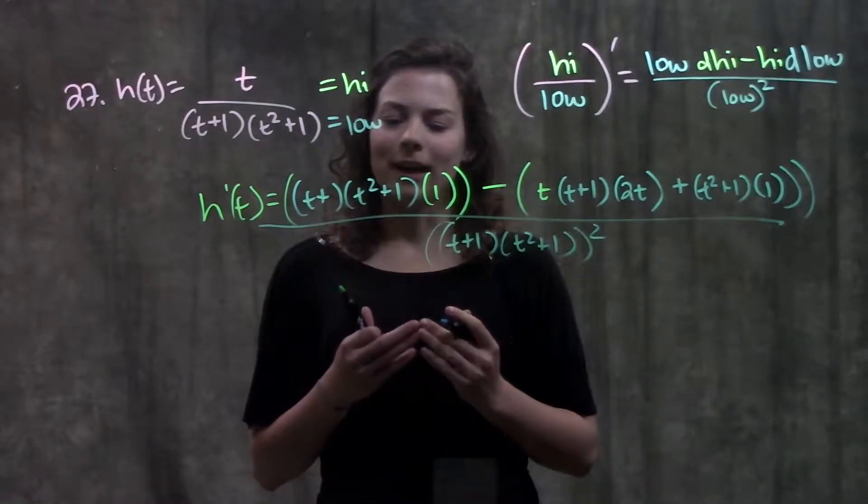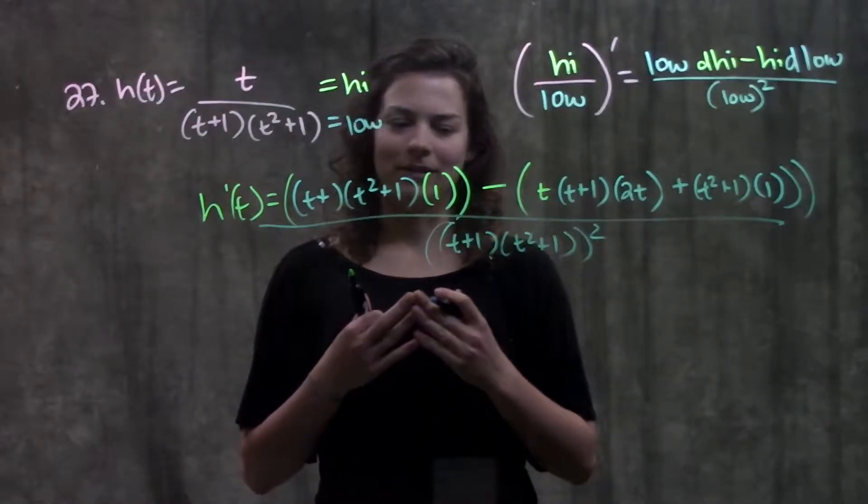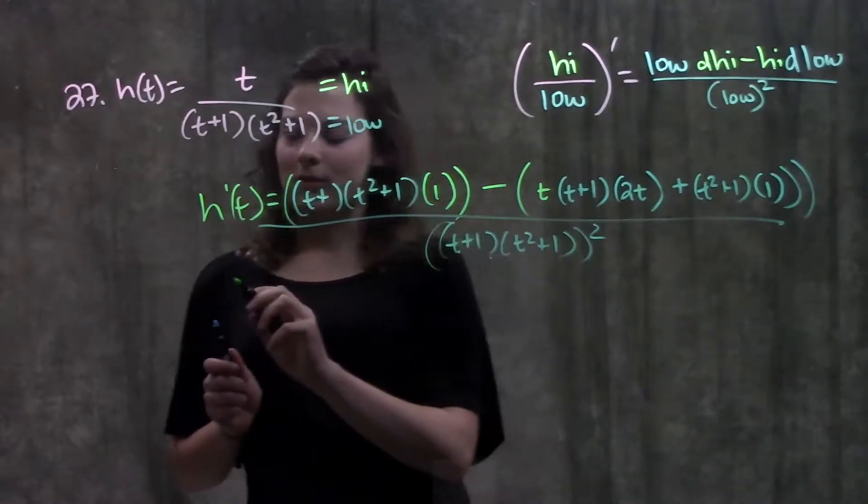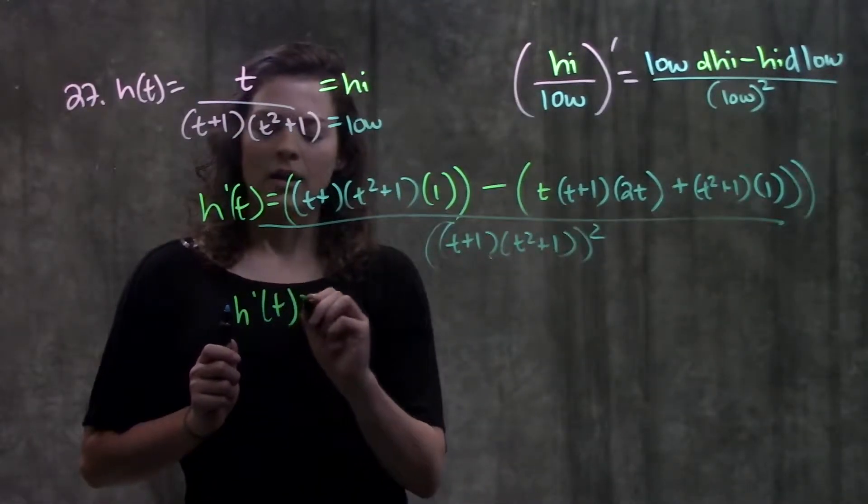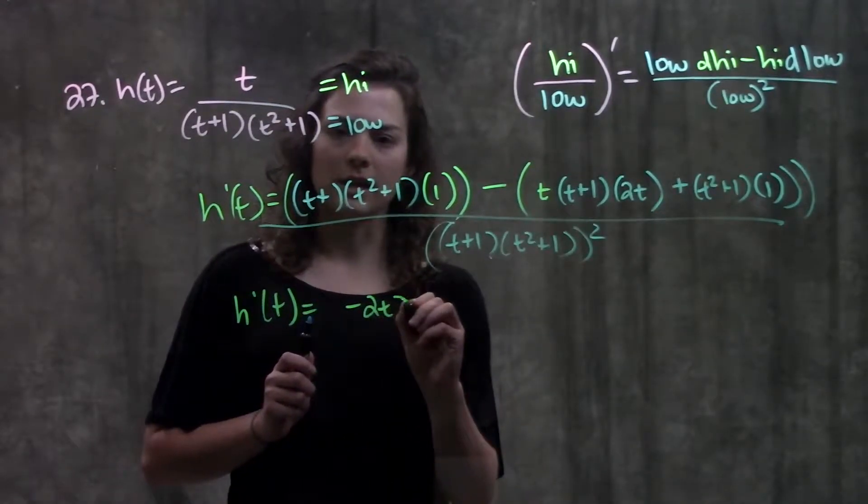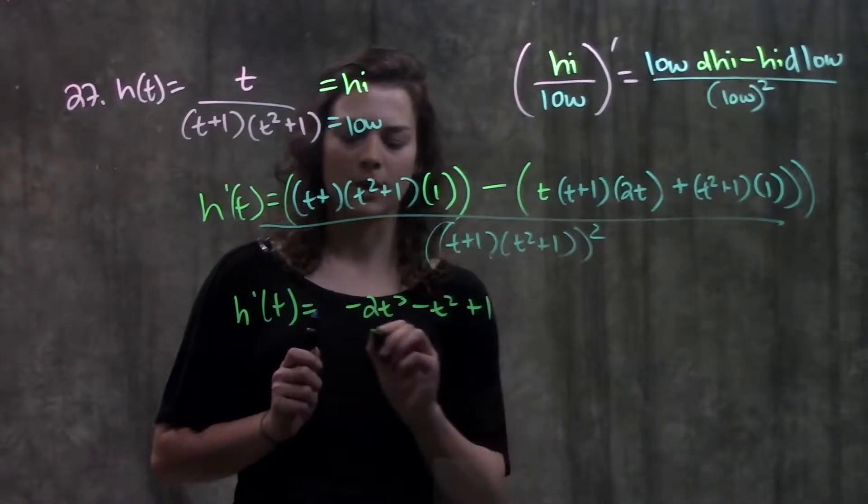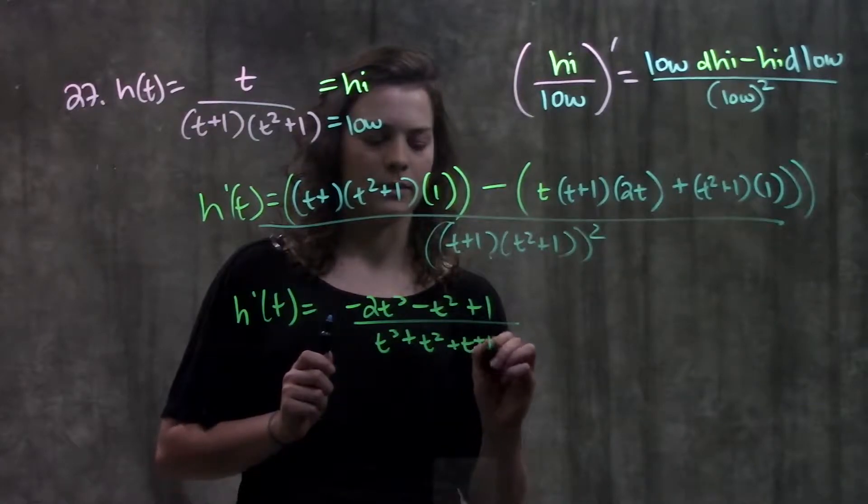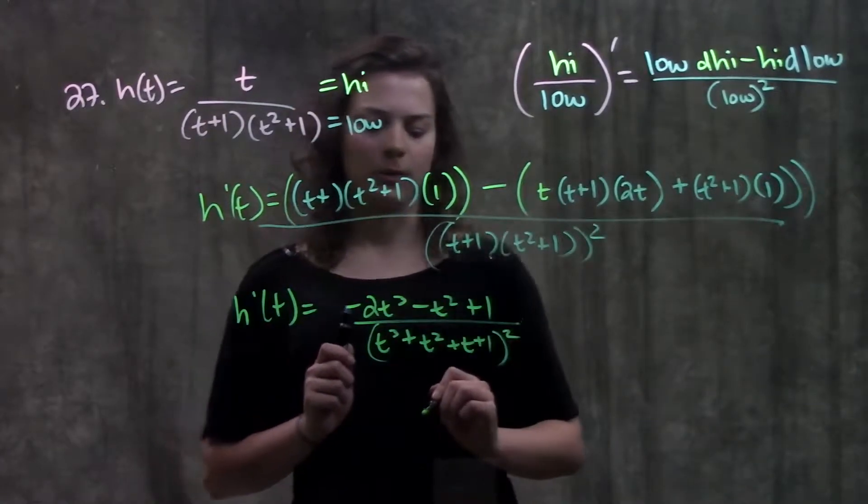Okay, so I'm not going to go through all the simplifying here because there is quite a bit to do. But I will tell you the answer. So if you want to go through this on your own. So when you multiply all this out, it becomes minus 2t cubed minus t squared plus one over t cubed plus t squared plus t plus one, all that squared.